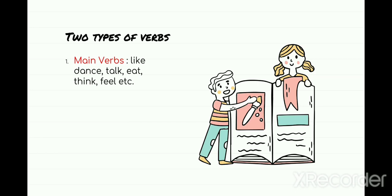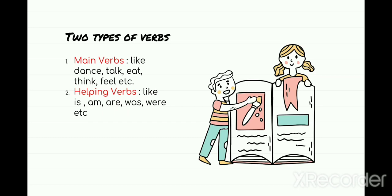Now let's see the second type of verb — the helping verbs. Why are they called helping verbs? Because they are sometimes attached to the main verb or they help in forming a correct sentence. These are your small words like is, am, are, was, were, has, have, had, will. These are all your helping verbs — because they either help the verb or help us to form a correct sentence.